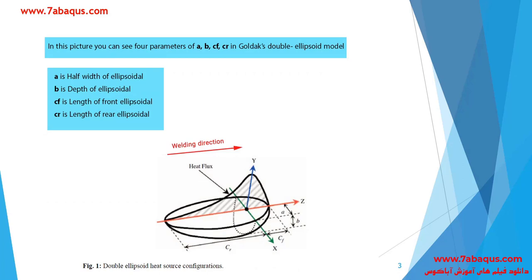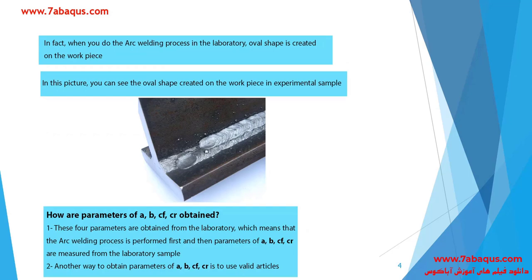In this picture you can observe these four parameters in the Goldak double ellipsoid model, in which a is the half width of the ellipse, b is the depth of the ellipse, cf is the length of the front ellipsoidal, and cr is the length of the rear ellipsoidal. When you implement the arc welding process in the laboratory, an oval shape is created on the workpiece.